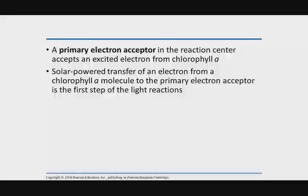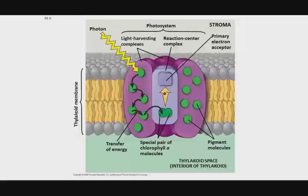That's going to be the special pair chlorophyll A that's going to actually lose an electron to start an electron transport chain. We have solar energy, sunlight energy, that's going to drive the redox chemistry of photosynthesis.